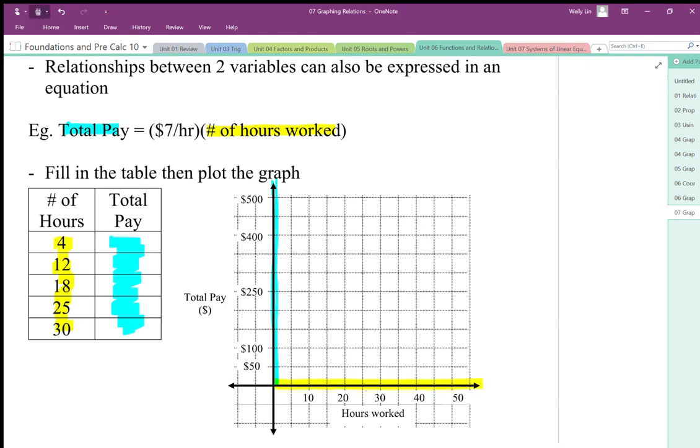So let's use our relationship here to calculate the total pay to connect our domain with our range or our input with our output. So 4 hours times $7 an hour gives us a total pay of $28. So when I graph that, it's going to be 4 and 28, maybe somewhere about there.